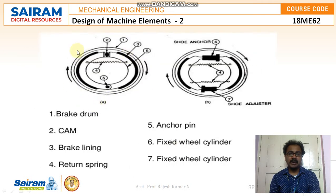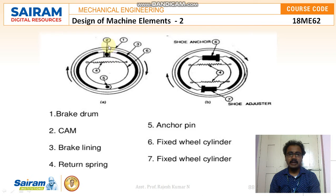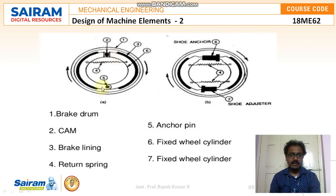Here you can see the brake drum and different parts. Number one is the brake drum — that is the outer circle. Number two is the cam mechanism. Number three is the brake lining, which is located between the brake drum and the cam mechanism, and the brake lining is made over the cam circle. Number four is the return springs — you can see this helical or sawtooth-type spring. Number five is the anchor pin.